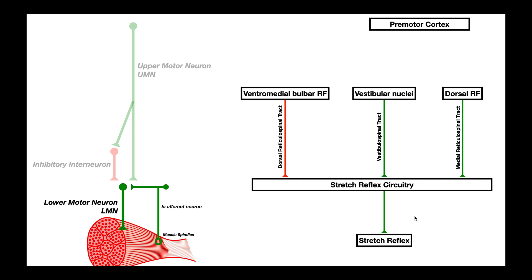Here's a question: if you wanted to activate the stretch reflex, which of these three nuclei would have to be activated? It would have to be the vestibular nuclei and dorsal reticular formation, and you would need the ventromedial bulbar reticular formation to be inhibited. But the central nervous system doesn't function that way — it functions by sending inhibitory input overall. So what the premotor cortex actually does by default is the opposite: it inhibits the dorsal reticular formation, inhibits the vestibular nuclei, and stimulates the ventromedial bulbar reticular formation.